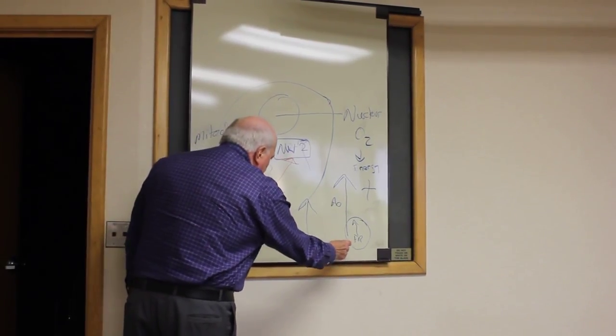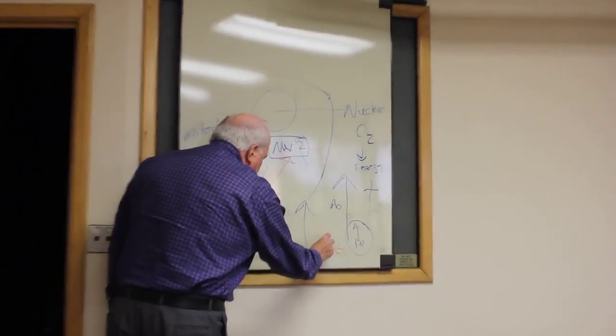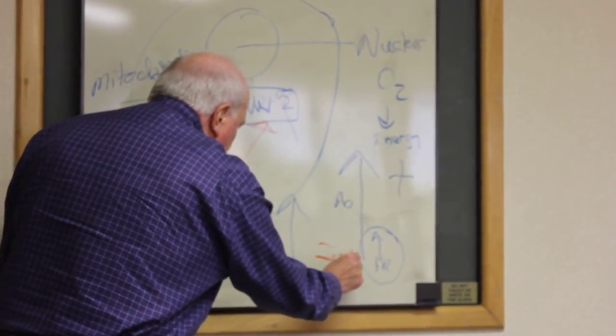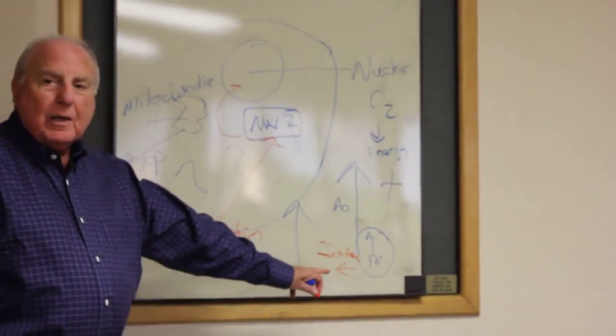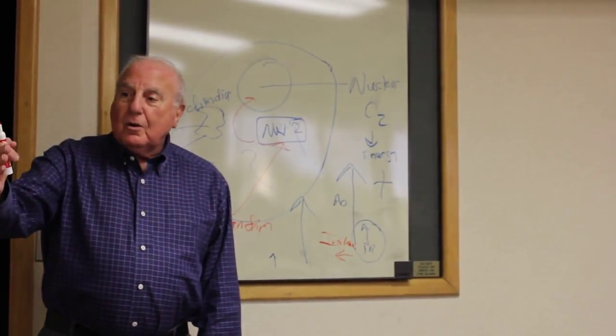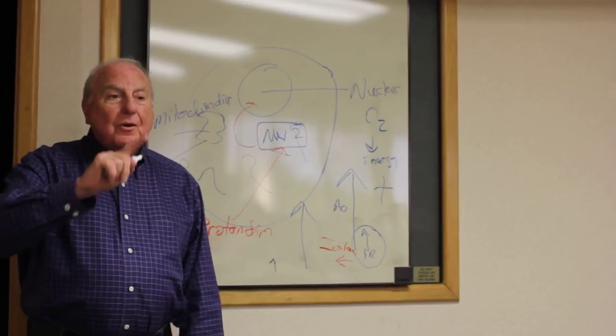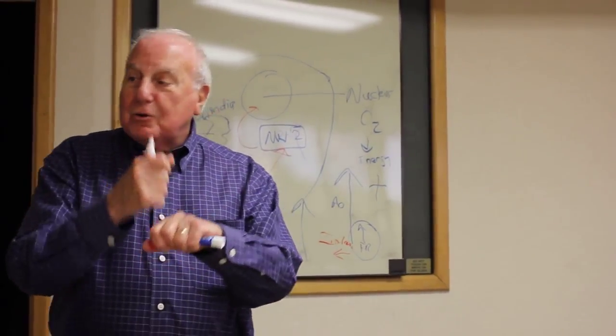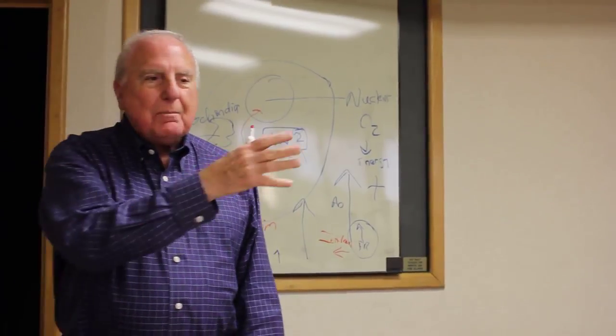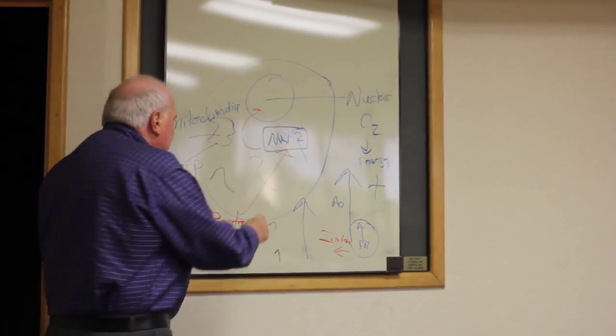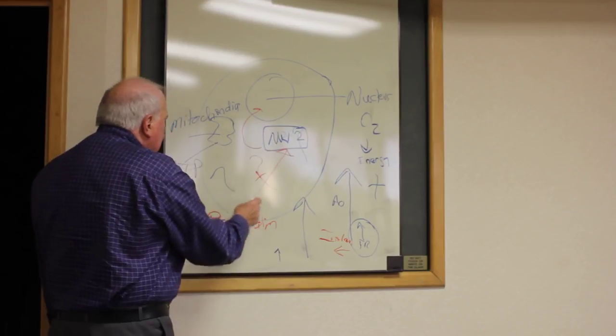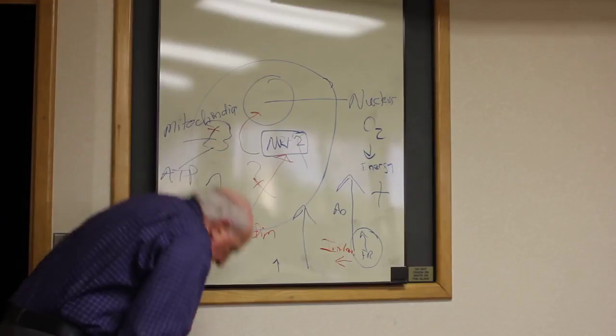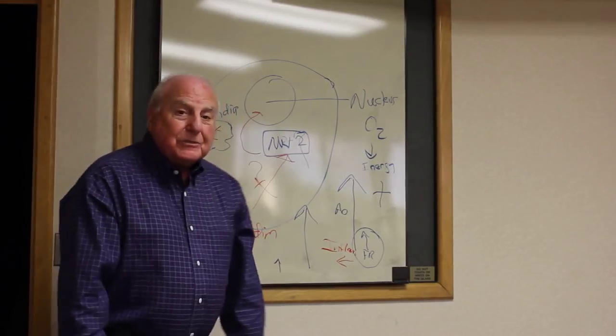So when you have free radicals, you get a response from the body called inflammation. And that is the reaction that is uniformly going to occur when you have that free radical not neutralized. Why? Because that free radical, when it doesn't get neutralized, attaches any place it wants to. It can attach to one of the engines here. It can attach to the mitochondria. It can attach to the cell membrane. It can attach any place.